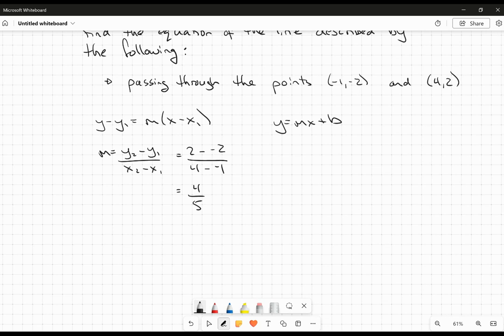I don't mind if students were to do this. If we choose that first point, you could have written this as y minus negative 2 equals 4 fifths x minus negative 1. Or you could have made that y plus 2 is equal to 4 fifths x plus 1. And I have no problem with that.